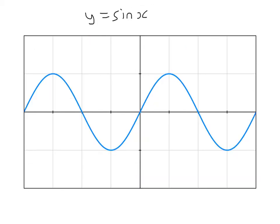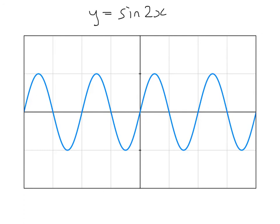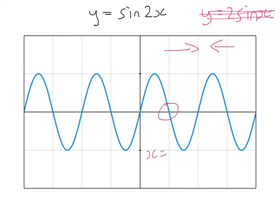You may have seen the graph of y equals sin x before — here is what it looks like. Here's the graph of y equals sin 2x. This is not the graph of y equals 2 sin x, which would be a scale factor of 2 in the y direction. Sin 2x squashes the graph in by a scale factor of 2, or you could say it stretches it by a scale factor of a half. At x equals 90, 2x equals 180, and sin 180 equals 0. So putting the 2x inside those brackets squashes it by a scale factor of 2, or stretches it by a scale factor of a half.